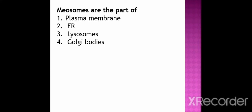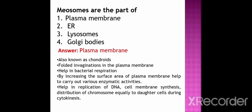Mesosomes are part of — option 1 plasma membrane, option 2 endoplasmic reticulum, option 3 lysosome, option 4 Golgi bodies. The correct option is plasma membrane. Mesosomes are also known as chondroids. They are the folded invaginations in the plasma membrane. They help in bacterial respiration and carry out various enzymatic activities by increasing the surface area of the plasma membrane. Mesosomes also help in replication of DNA, cell membrane synthesis, and distribution of chromosomes equally to daughter cells during cytokinesis.